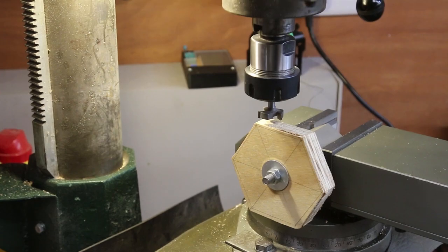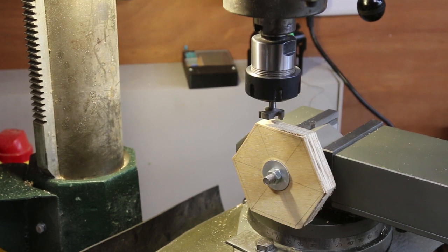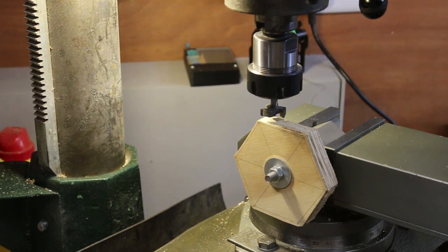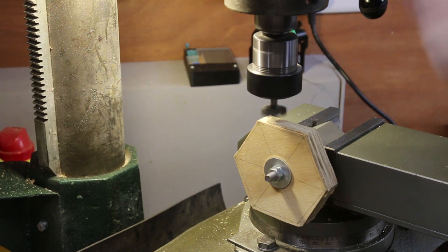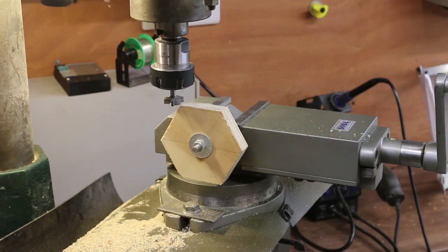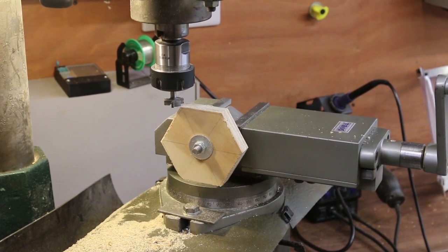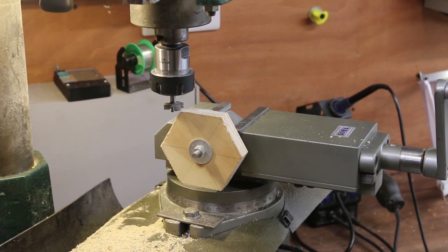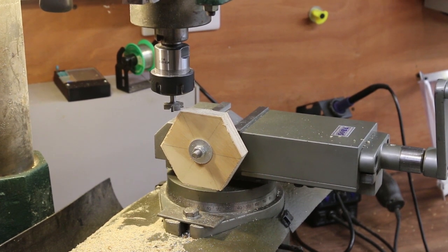This allows me to machine the outside accurately on all six faces. I shall do this with a 25 millimeter surfacing cutter. I cut all six faces to an estimated height. That allowed me to measure it and calculate the correct height.